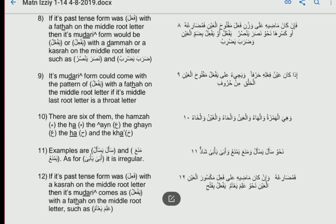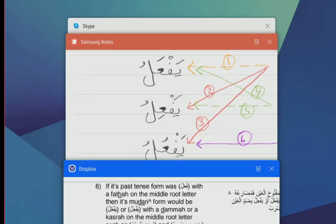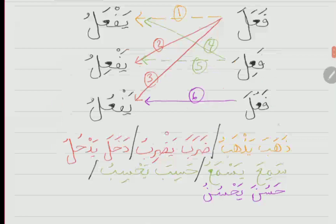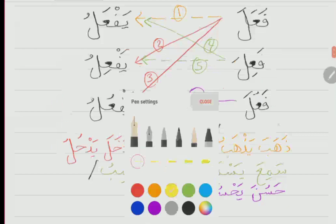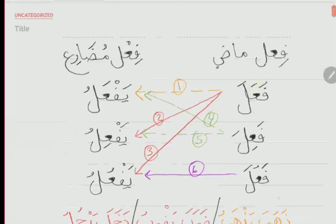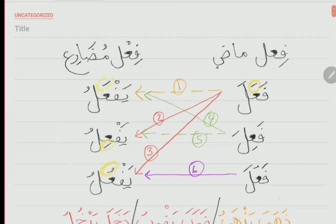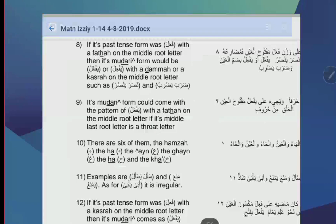Now let's answer the question: why is number one dashed — fa'ala yaf'alu? The author just said if the madi is fa'ala with a fatha on the ayn, its mudari could be yaf'ilu or yaf'ulu. He didn't say anything about yaf'alu, although we did list it. That's why we dashed that line. So when would the mudari of fa'ala be yaf'alu with a fatha on the ayn? That's what he's going to tell us now.